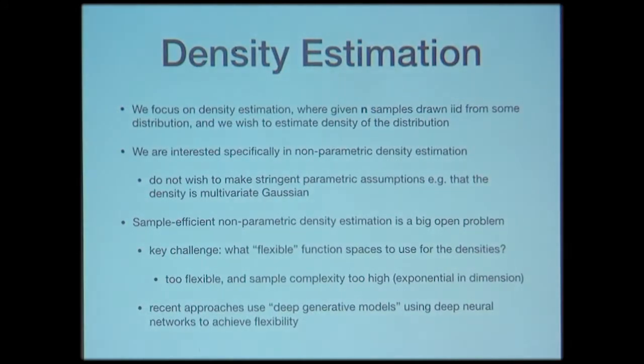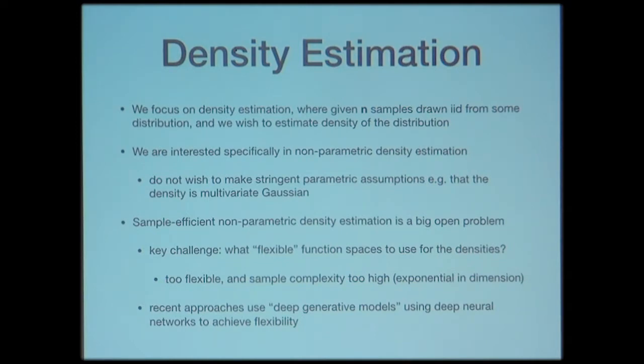Let's specifically look at the problem of density estimation. We are given n IID samples drawn from some distribution, and the goal is to recover the density just from those samples. If I know the parametric family — say Gaussian, multivariate Gaussian, or mixture of Gaussians — I could compute and maximize the log likelihood, and there are very good guarantees. The problem is when I don't want to impose stringent parametric assumptions — this is called non-parametric density estimation, and it's an open problem to do this in a sample-efficient way.